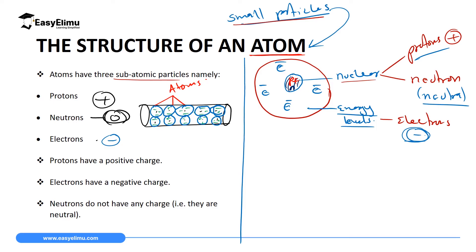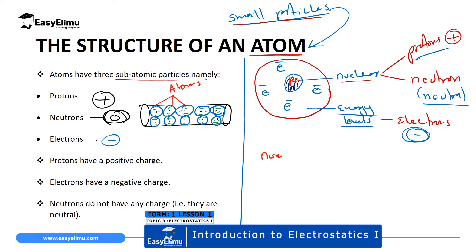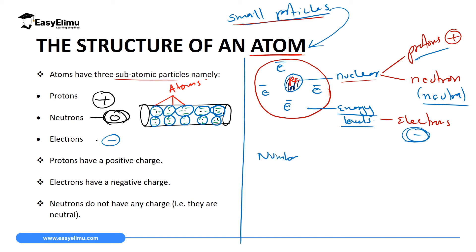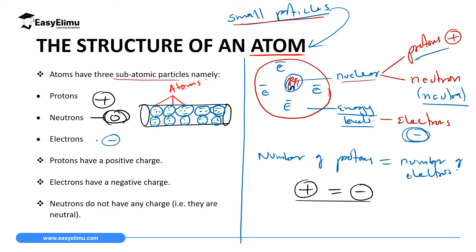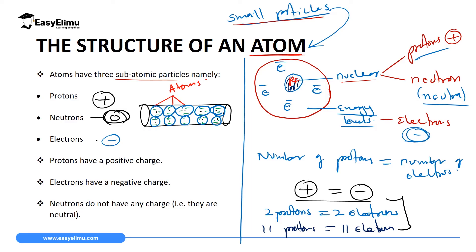Another important thing to note about the structure of an atom is that the number of protons — which are positively charged — is always equal to the number of electrons, which are negatively charged. In simple terms, the number of positively charged subatomic particles equals the number of negatively charged subatomic particles. So if an atom has two protons, it will also have two electrons. If an atom has 11 protons, it will also have 11 electrons. That is why we say an atom is electrically neutral.